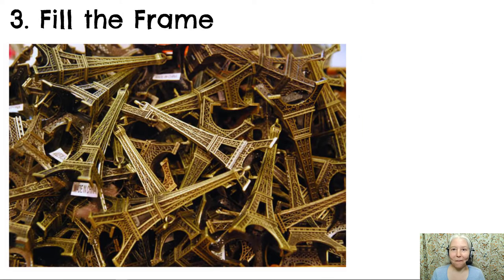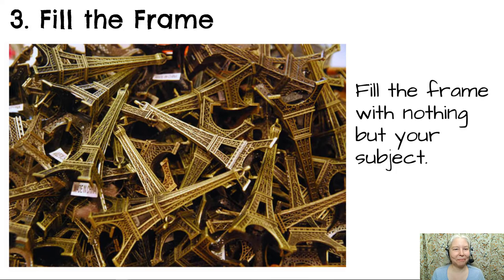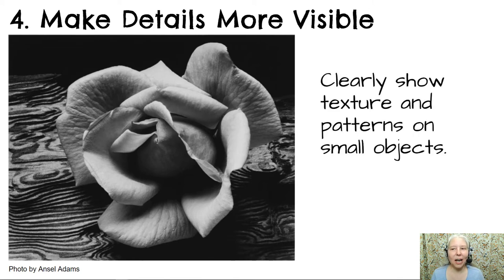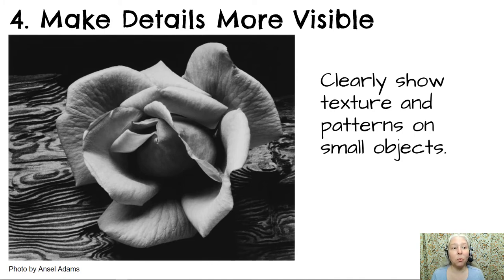Number three, fill the frame. Number four, make details more visible — clearly show texture and patterns on small objects. In this case, we have a lovely velvety rose with very detailed veins on all of the petals. In the background, there's a piece of wood with lovely patterns created by the wood grain.